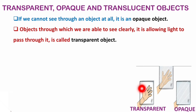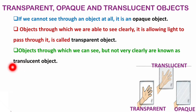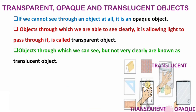Next, objects through which we can see but not very clearly are known as translucent objects. You can see a hand through it, but it is not completely clear. If we cannot see clearly through it, then it is a translucent object.